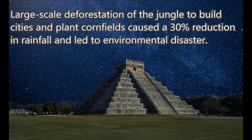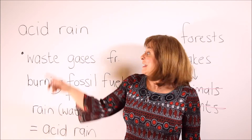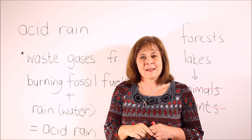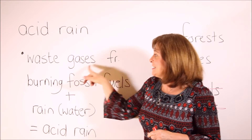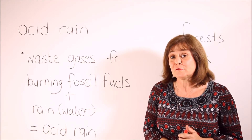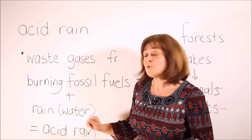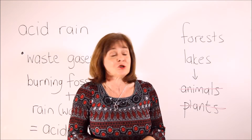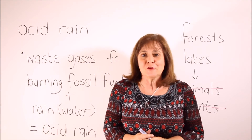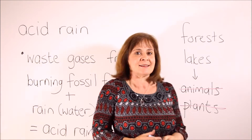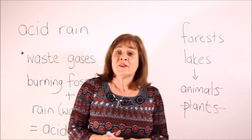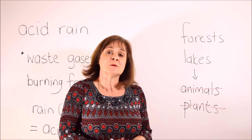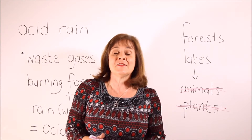Our next term is acid rain. Acid rain is acidic rain that forms when the waste gases from burning fossil fuels combine with rain water as it falls from the sky. And this unholy concoction kills forests and pollutes lakes. Many lakes and other waterways become so acidic that some animals and plants can no longer live in them.